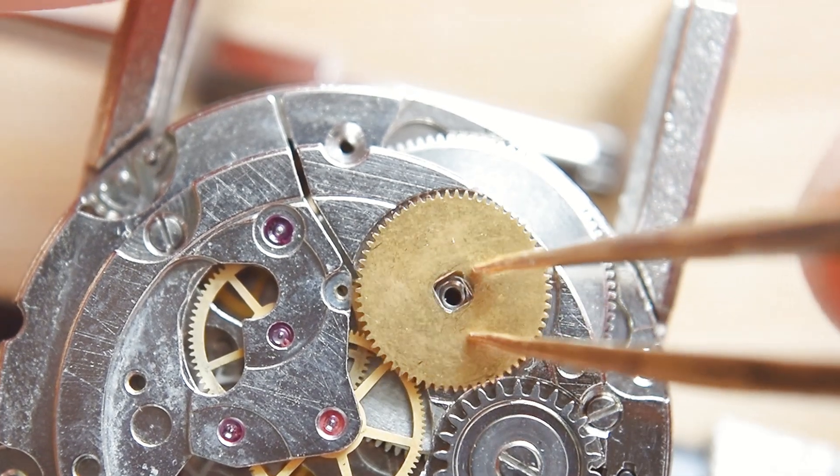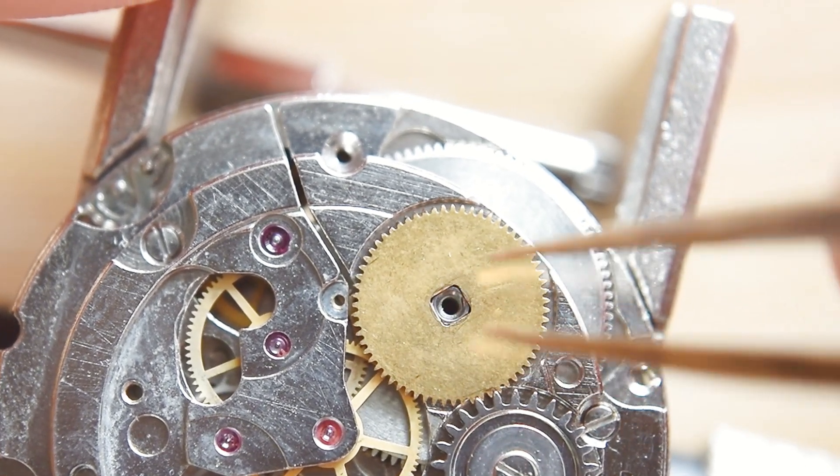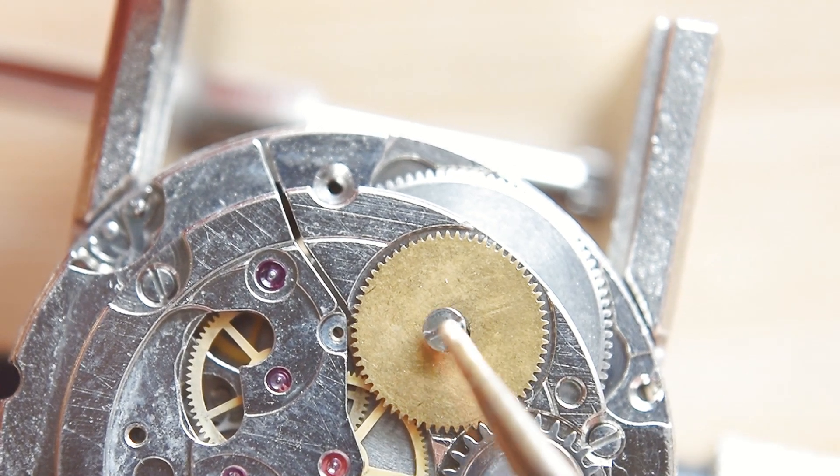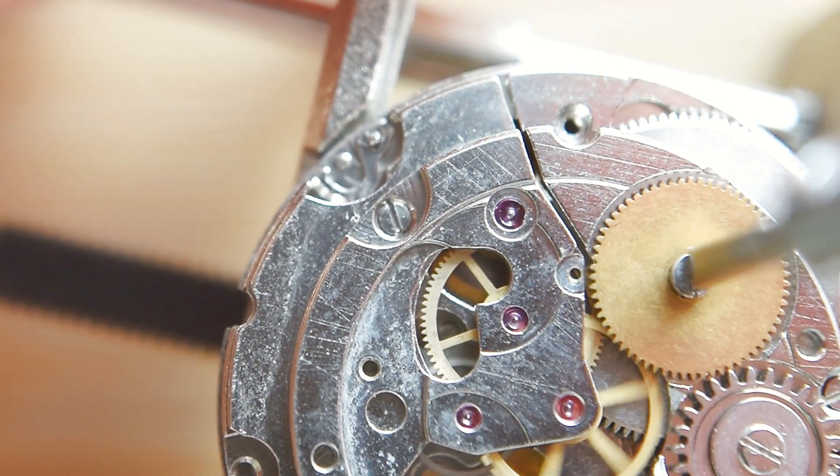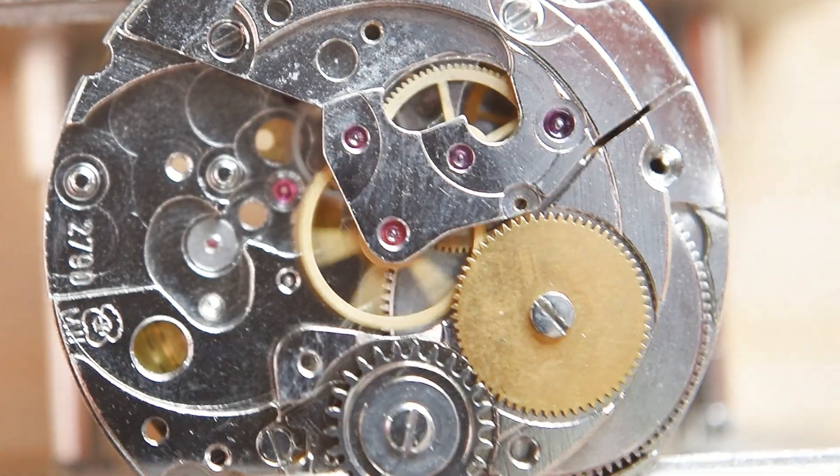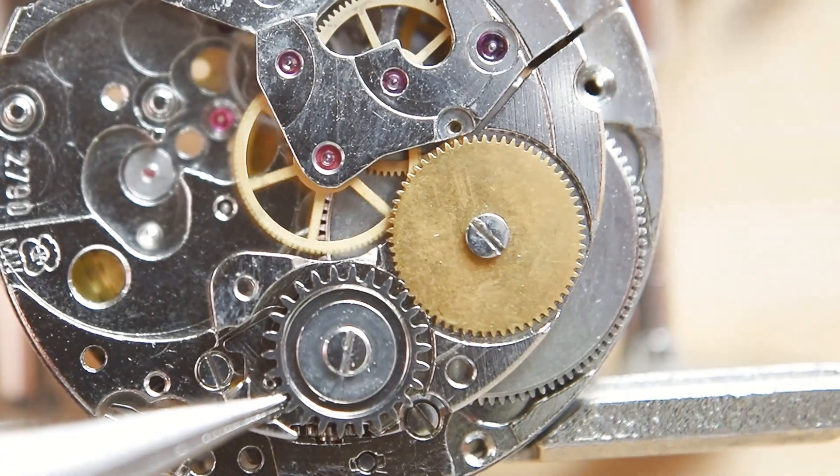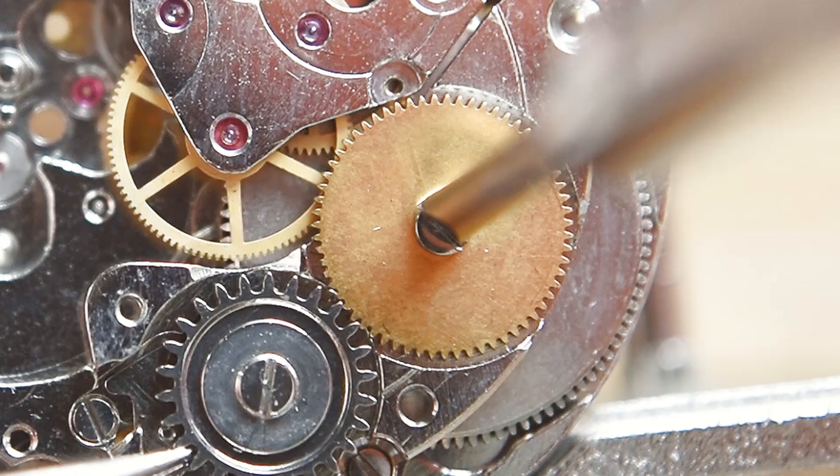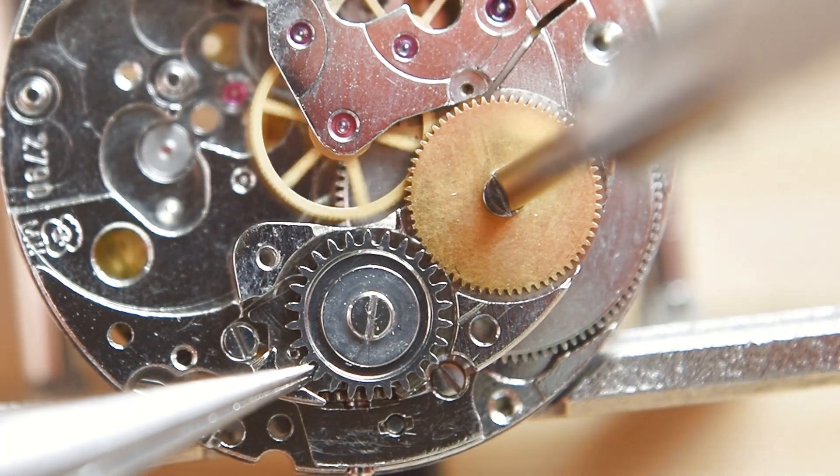The ratchet wheel. Let's secure it with this screw. Now I have to tighten all these screws. Actually only this one.